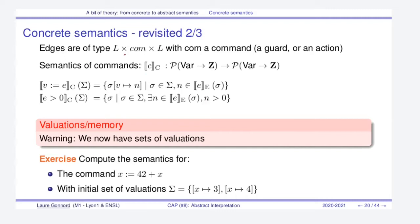First of all, we re-express the semantics of the commands. From the former graph, all edges are of the same type: I come from a given control point, I have a command, and my destination is a given control point. The command is either a guard or an action, which makes it easier to define the semantics because we only have two possibilities. For instance, the assignment semantics takes as input a set of valuations and the content of the command itself. The effect of this transition on the set of valuations gives all the valuations where we have evaluated n and assigned each single value onto v.